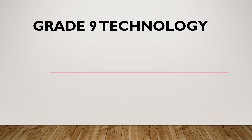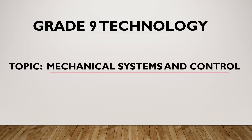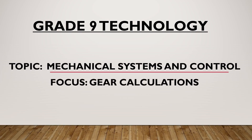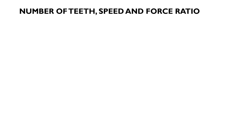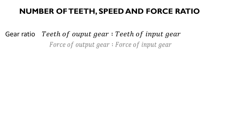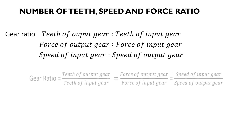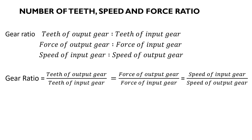Ladies and gentlemen, welcome once again to Technology Grade 9. We are still on mechanical systems and control. As I promised, this is the second lesson on gear ratios and today we are doing calculations. In our previous video we talked about the formulas you are going to use to calculate different components in gears. These are the formulas: gear ratio can be calculated as the number of teeth of output gear over the number of teeth of input gear, and also as force of output gear over force of input gear. When it comes to speed, it is an inverse — gear ratio is calculated as speed of input gear over speed of output gear.